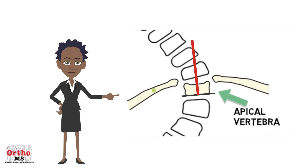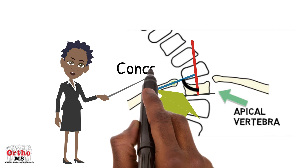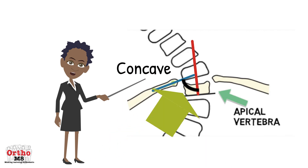Find the midpoint of the neck of the rib and that of the head of the rib. A line through these midpoints creates an angle with the perpendicular line. This angle is called the rib vertebra angle, or RVA, on the concave side.